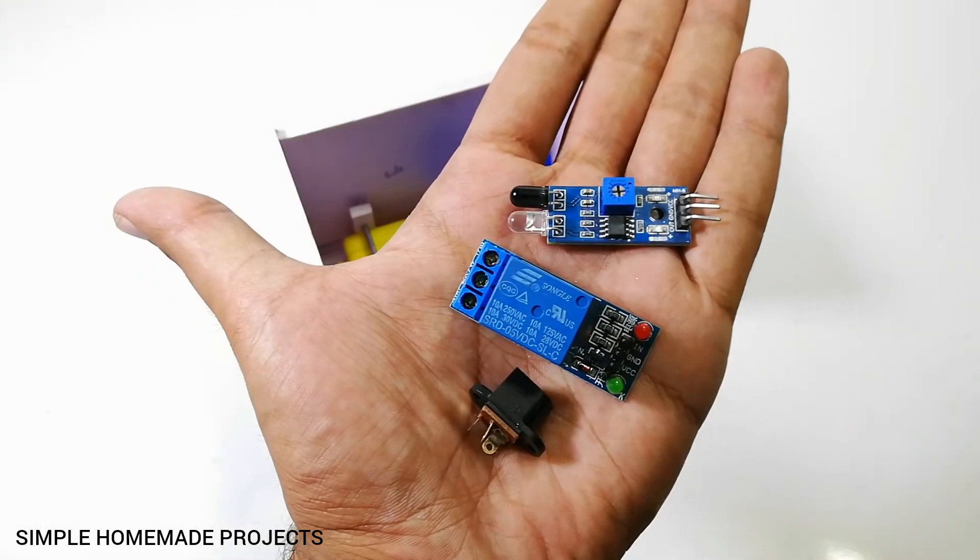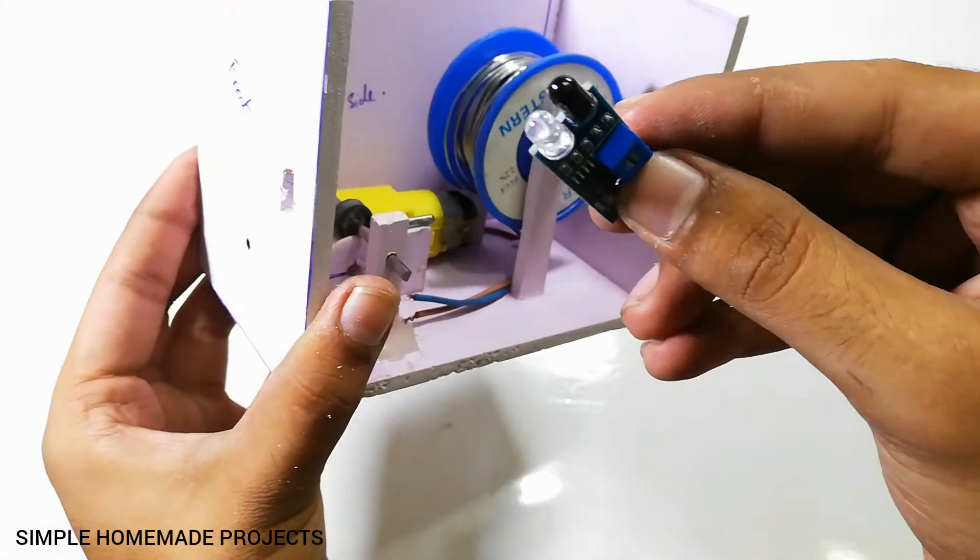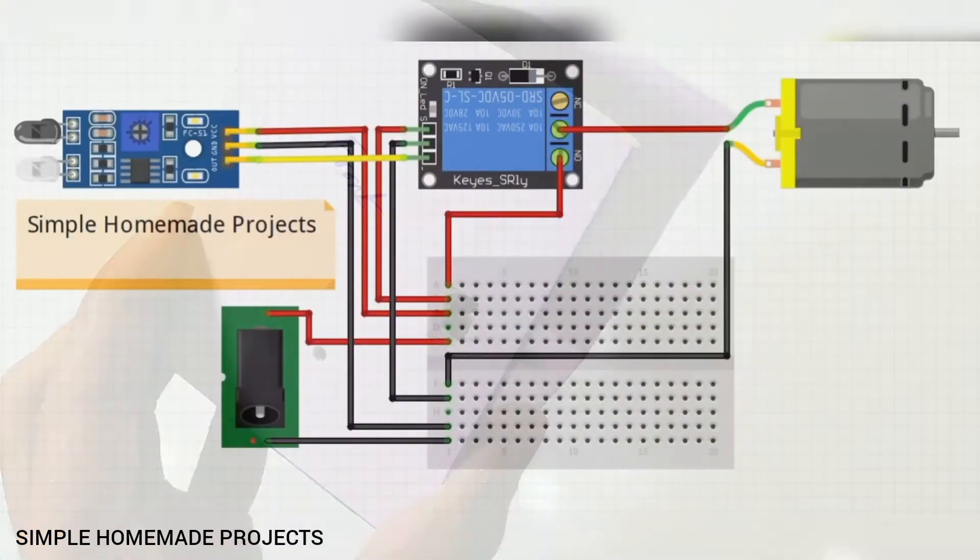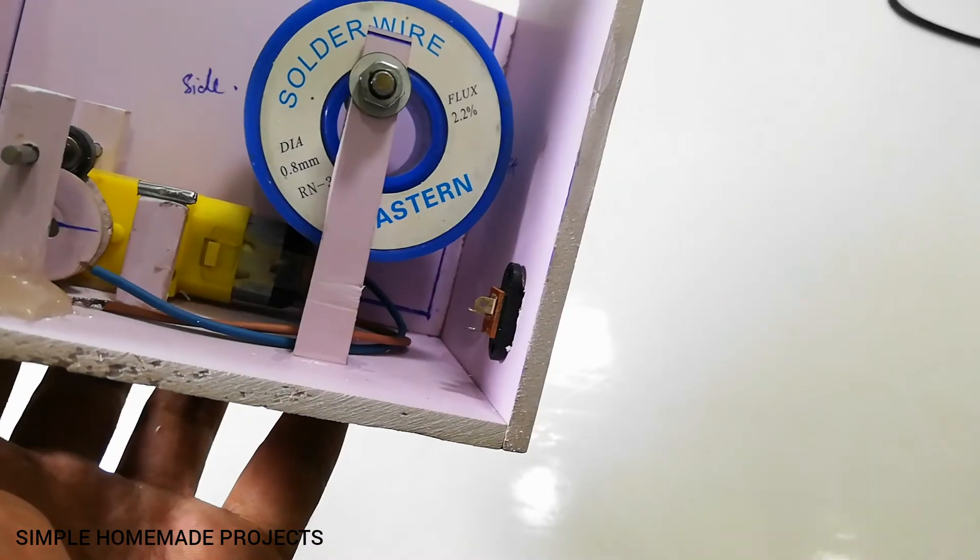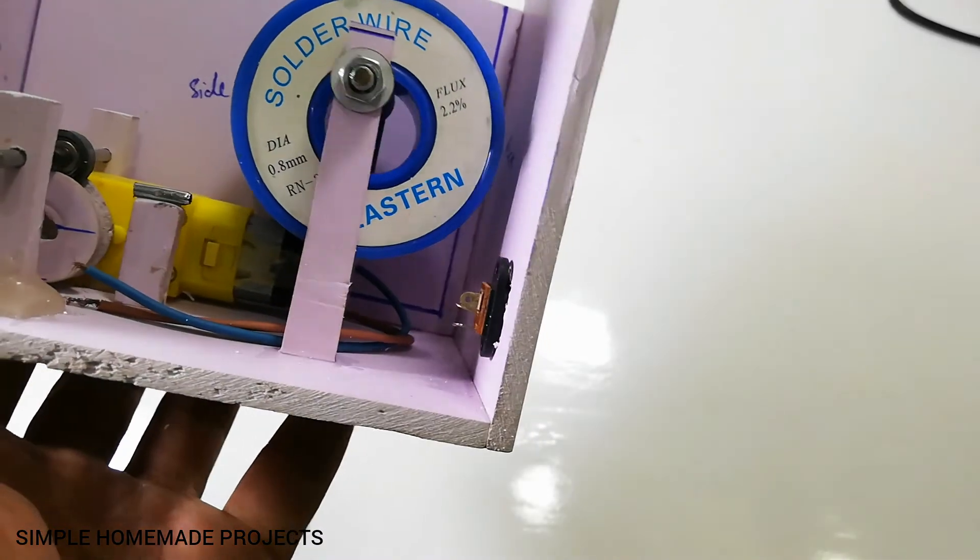Now it's time to install the electronics. Make all the connections as shown in this circuit diagram. Don't forget to attach the motor wires in the normally open terminals of the relay module.